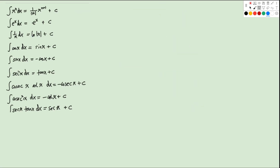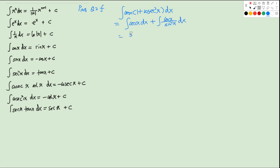Now let's take a look at question 2, part F, also on page 148. We have the integral of cosx(1 + cosec²x) dx. We expand to get the integral of cosx dx plus the integral of cosx·cosec²x dx. For cosx the result is sinx. For the second term, cosx·cosec²x equals cotx·cscx, so using the standard formula the result is minus cscx. Therefore the answer is sinx − cscx + C.